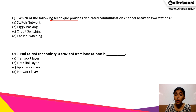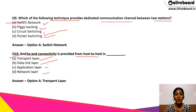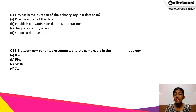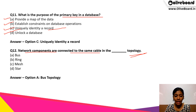Which technique provides dedicated communication channel between two stations — switch network, piggybacking, circuit switching or packet switching? The correct answer is A, switch network. End-to-end connectivity is provided from host to host in — transport layer, data link layer, application layer or network layer? The correct answer is A, transport layer. What is the purpose of a primary key in a database — provide a map of the data, establish constraints on database operations, uniquely identify a record, or unlock a database? The correct answer is C, uniquely identify a record. Network components are connected to the same cable in which topology — bus, ring, mesh or star? The correct answer is A, bus topology.